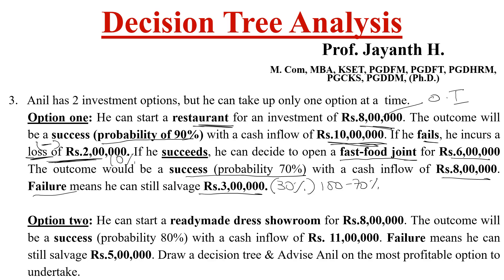Coming to Option 2: he can start a ready-made dress showroom for rupees 8 lakh — this is once again the original investment. The outcome will be a success with a probability of 80% with a cash inflow of 11 lakh; failure would be 20%. Also remember, whenever there is a salvage value, it is not minus — those terminologies are always in plus.